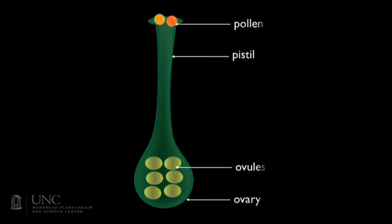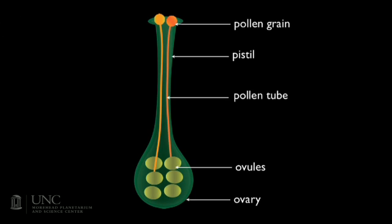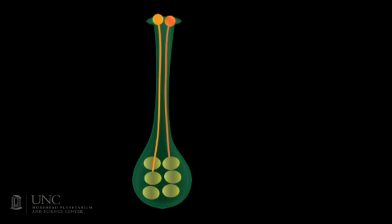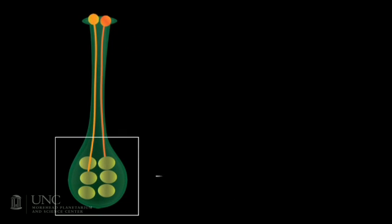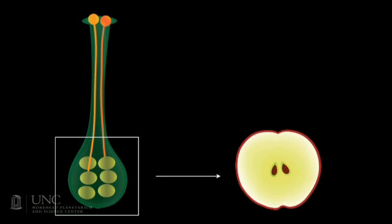So what happens next? Once the pollen grain lands on the stigma, it forms a tunnel, called a pollen tube, which connects to the ovule. Then the pollen fertilizes the egg by adding its chromosomes to those in the egg. The egg develops into an embryo, the ovule develops into a seed, and the ovary develops into a fruit.